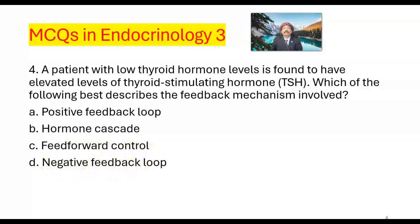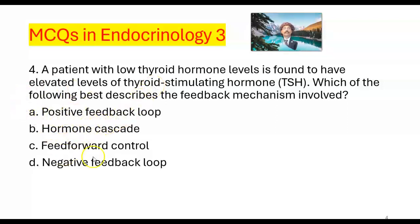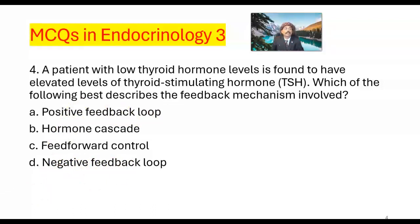Which of the following best describes the feedback mechanism involved in this patient who has elevated level of TSH but low thyroid hormone? The answer should be D — negative feedback loop.